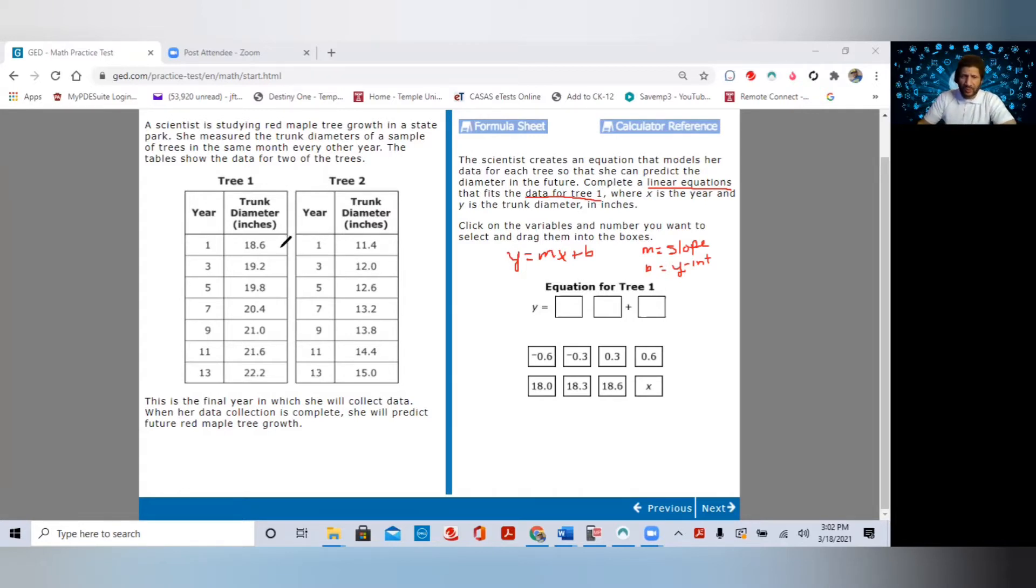And that's our change in Y. Because we remember slope is equal to rise over run or the change in Y over the change in X. So from 18.6 to 19.2, we went up positive 0.6. So our 0.6 is our numerator. Our change in X, we went from one to three. So we went up plus two. We should know this. You should be able to do mental math and know that means our slope is 0.3. So we should know our slope is 0.3.